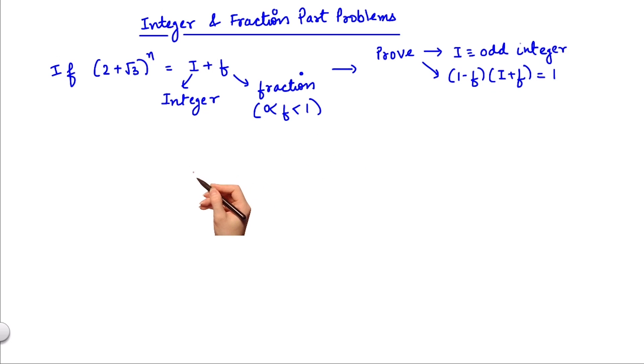Now there is a set pattern as to how we go about solving these questions. First we are given that 2 plus root 3 to the power n equals i plus f. Now a thing to note in these types of questions would be that we would be given a plus b to the power n, where a minus b, which in this case 2 minus root 3, will always be less than 1.